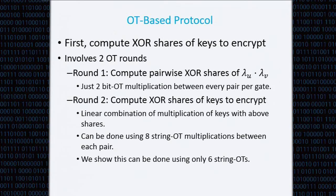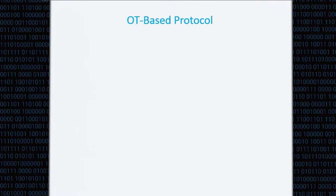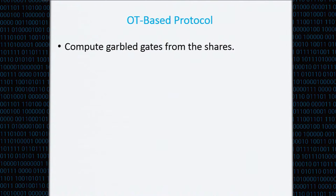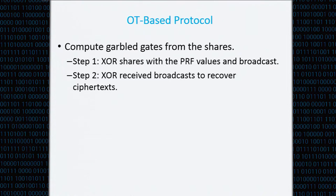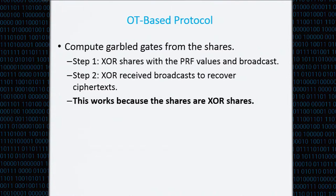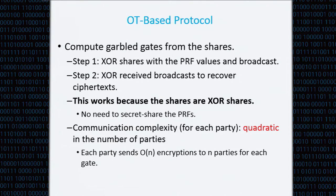Now the parties hold source shares of the keys they want to encrypt. They compute the garbled gates from these shares in a simple two-step process: first, they XOR their shares with the PRF values and broadcast; then they XOR the received broadcast and recover the ciphertext. This works because the shares are XOR shares — when parties XOR the broadcast, they XOR the shares back into the keys. This means we don't actually have to secret share the PRFs. However, the communication complexity for each party is quadratic in the number of parties, because each party has to send O(N) encryptions to N parties for each gate.